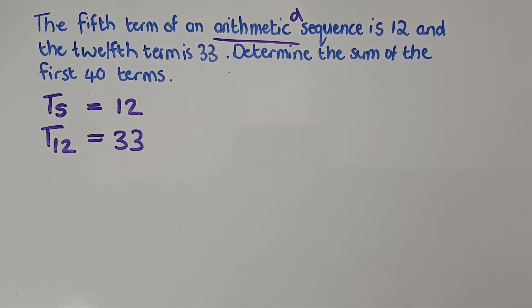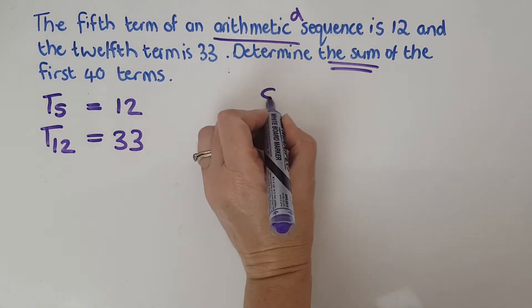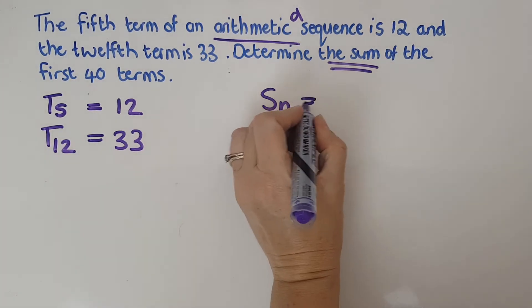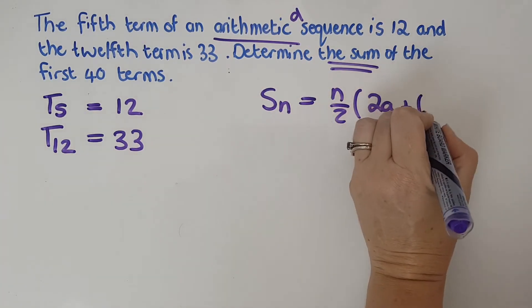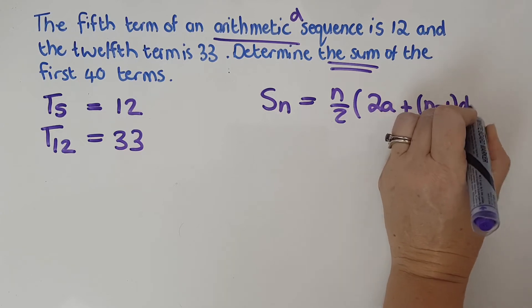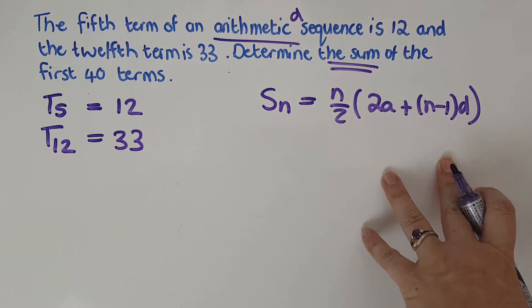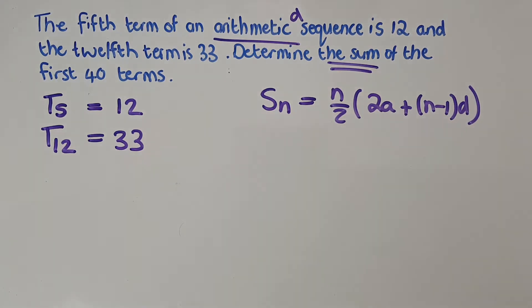The sum—I know it's arithmetic, so that's n over 2, 2a plus (n minus 1)d. So I've just got my head into the game here: t's and Sn.